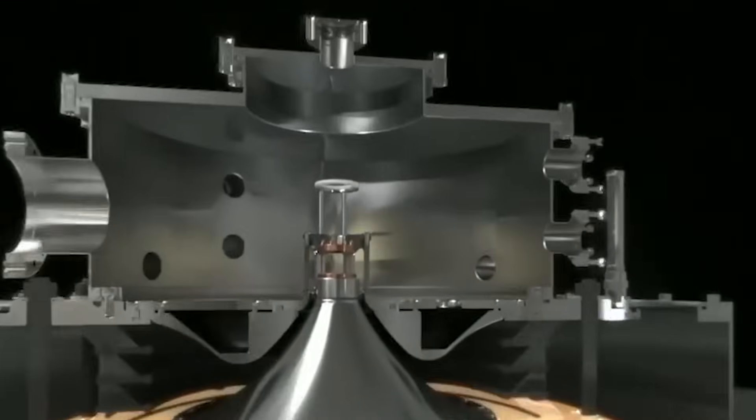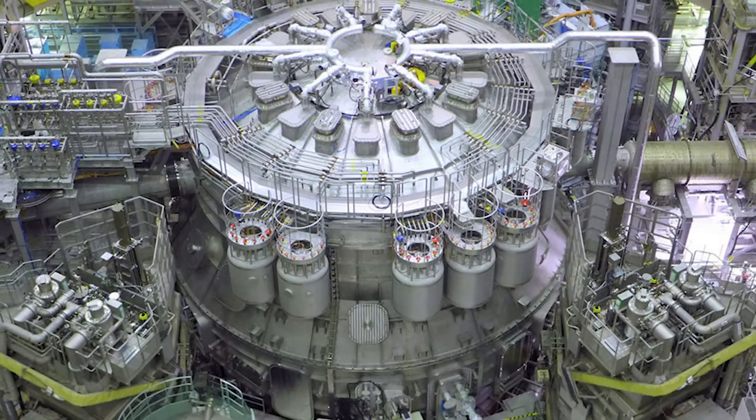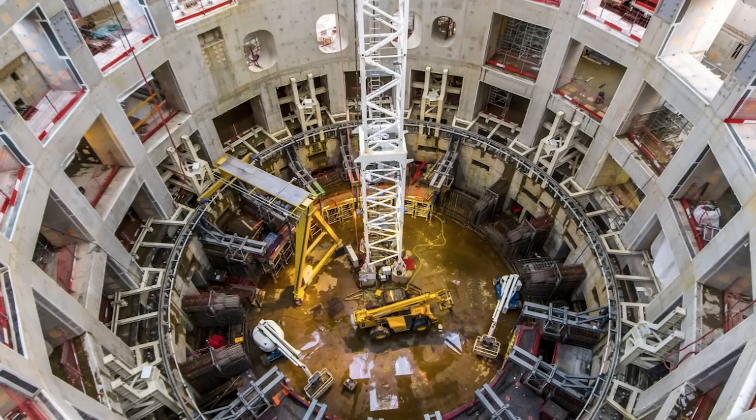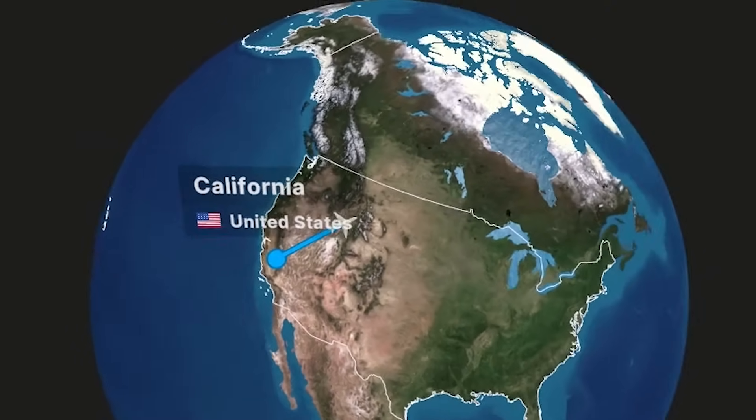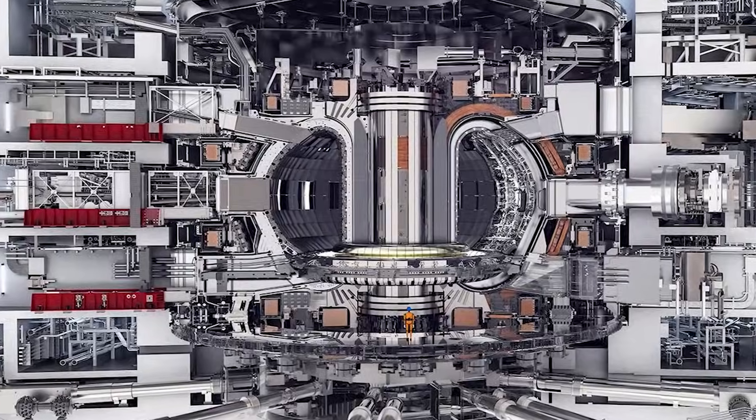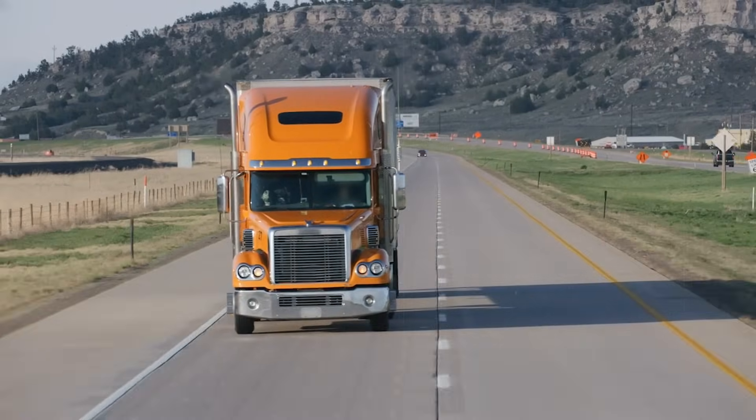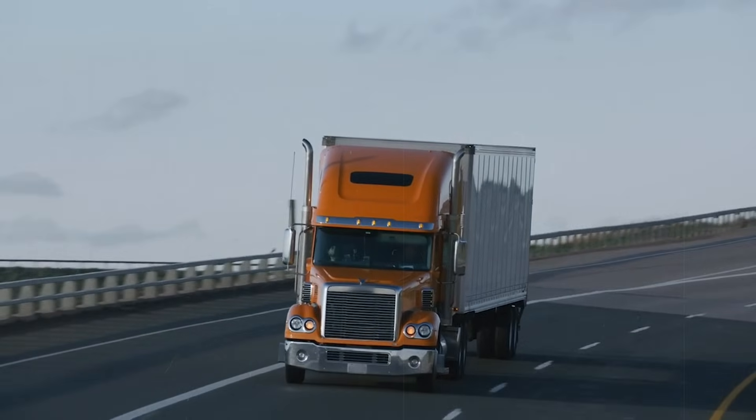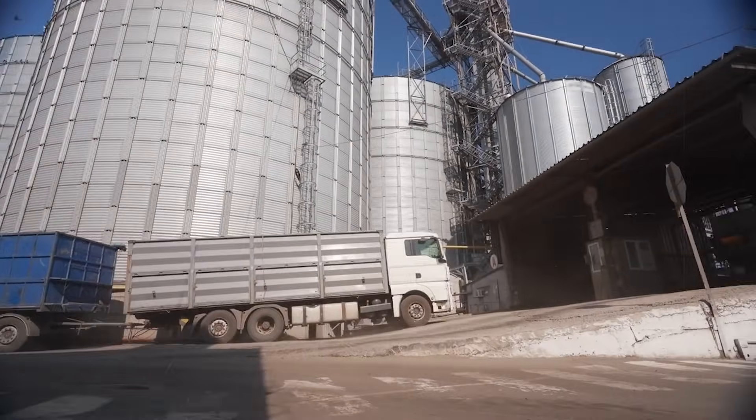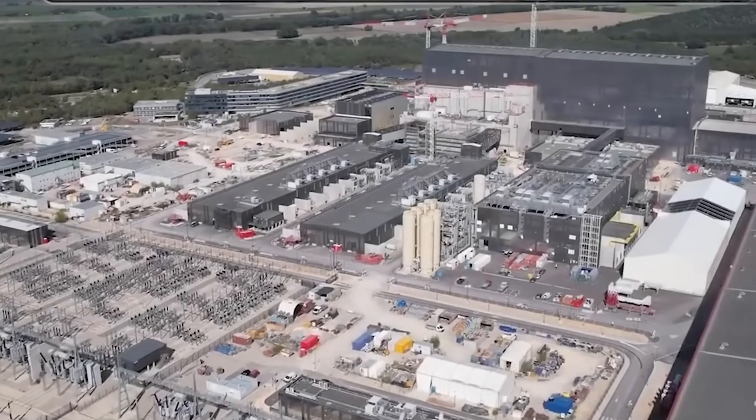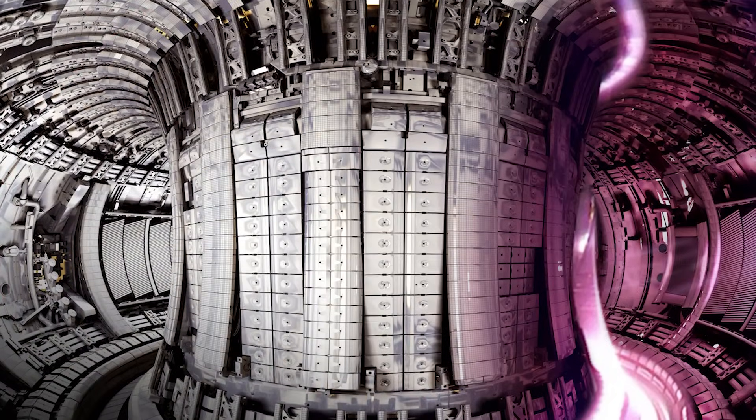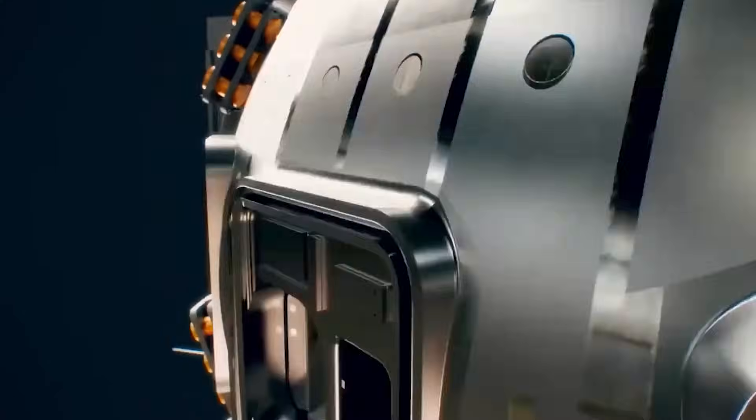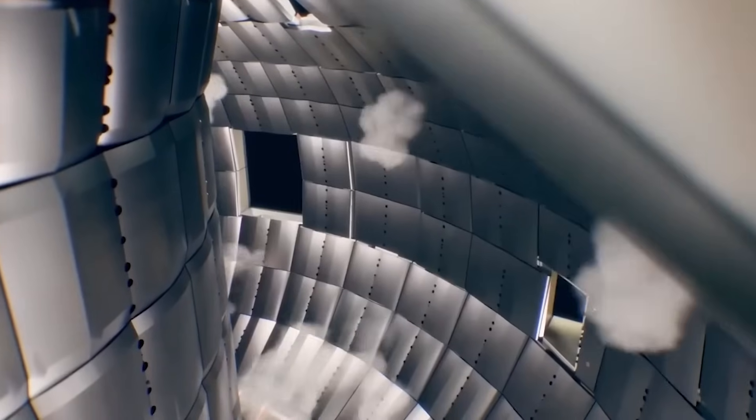The sheer scale of the project demanded new manufacturing methods, precision beyond aerospace standards, and coordination with a global supply chain stretching across continents. Every module of the solenoid was assembled and rigorously tested before being carefully packed for the long trip to France, where ITER rises from the ground in Cadarache. Watching the transport convoys snake through highways, carrying loads heavier than jumbo jets, gave a glimpse of just how extraordinary this effort was. When the solenoid was finally delivered, it was proof that collaboration between industry, science, and nations can tackle challenges once thought impossible, and bring the future of fusion a step closer.